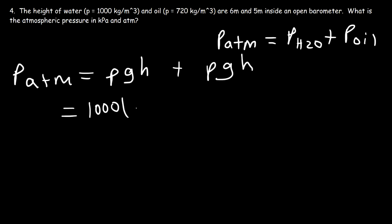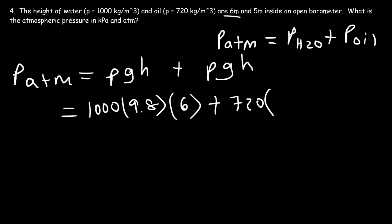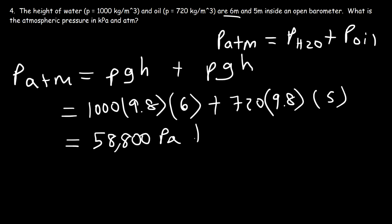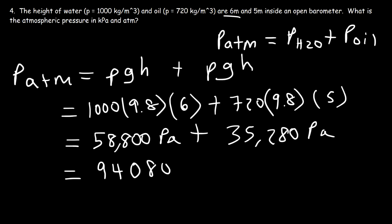The density of water is 1,000 kg/m³, g is 9.8, and the height of water is 6 meters. The density of oil is 720 kg/m³, g is 9.8, and the height of oil is 5 meters. The pressure due to the water column alone is 1,000 times 9.8 times 6, which equals 58,800 Pascals. The pressure due to the oil is 720 times 9.8 times 5, which equals 35,280 Pascals. Adding these two values gives 94,080 Pascals.